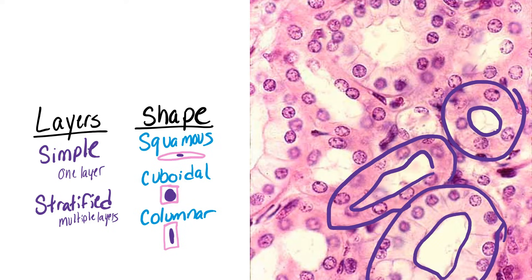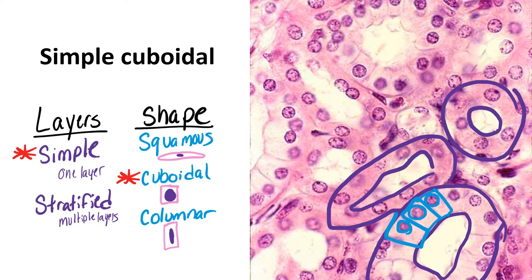Here, we don't have multiple layers of cells. We have multiple single layers of cells that are all lining their own open space, so this will be simple. And when we look at the shape of the cells, you might debate: is that a cube or is that a column? Pay attention to the shape of the nuclei — if it is a circular nuclei, it is cuboidal. So that makes this simple cuboidal epithelium.